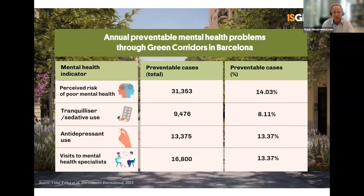In actual numbers, this would mean we could prevent 31,000 cases of poor perceived mental health, or around 10,000 people that use tranquilizers every year, or 13,000 that use antidepressants. These are fairly large numbers that we could prevent if we would green the city more. The numbers are large because in Barcelona and many other cities, many people suffer from poor mental health — and this only became worse after COVID. These changes can actually improve the situation.